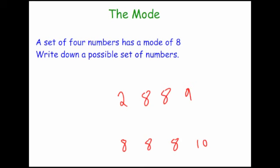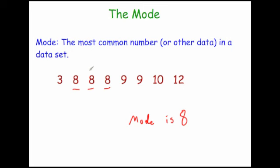So that's it. The mode is the most common number in a data set, or the most common word or symbol in a data set.